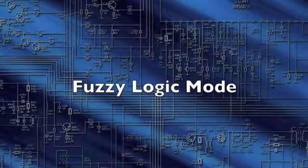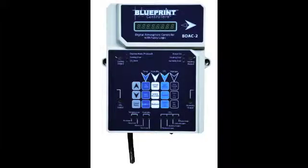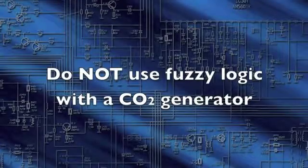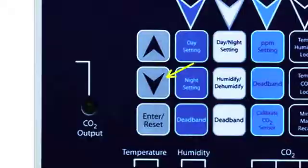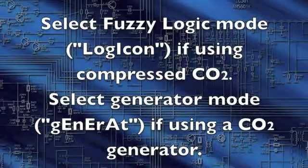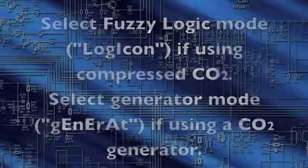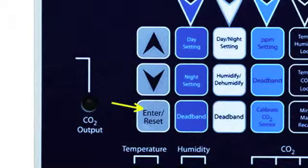Fuzzy Logic Mode counters rising or falling CO2 levels by quickly activating the CO2 solenoid valve, allowing CO2 levels to be controlled more precisely. This function can be used only with compressed CO2 — do not use Fuzzy Logic with a CO2 generator. Hold Enter Reset for 5 seconds to activate or deactivate Fuzzy Logic Mode. Use the up and down arrow buttons to choose between Fuzzy Logic Mode if using compressed CO2, and Generator Mode if using a CO2 generator. Press Enter Reset to accept the new setting.